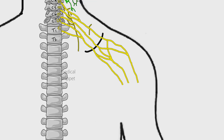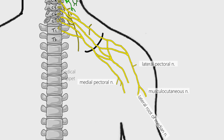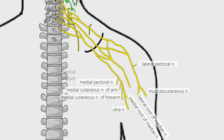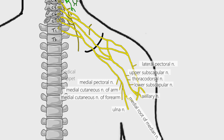The infraclavicular branches arise from the cords. The branches from the lateral cord are lateral pectoral nerve, musculocutaneous nerve, and lateral root of median nerve. The branches from the medial cord are medial pectoral nerve, medial cutaneous nerve of the arm, medial cutaneous nerve of the forearm, ulnar nerve, and the medial root of median nerve. The branches from the posterior cord are upper subscapular nerve, thoracodorsal nerve, lower subscapular nerve, axillary nerve, and radial nerve.